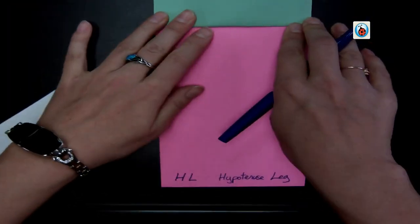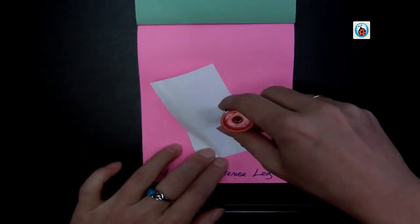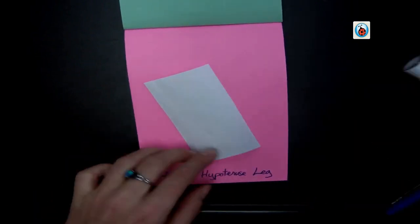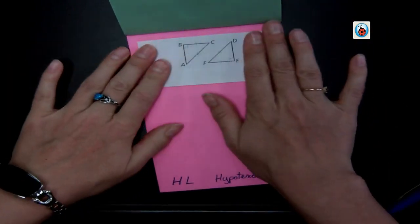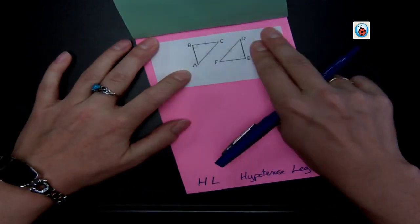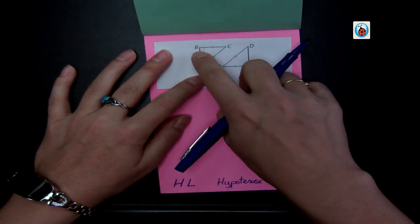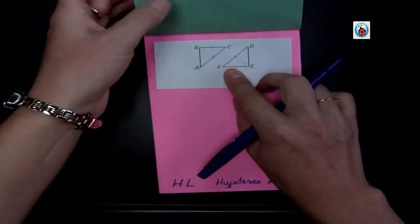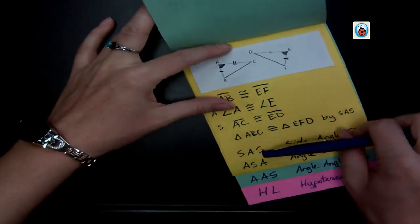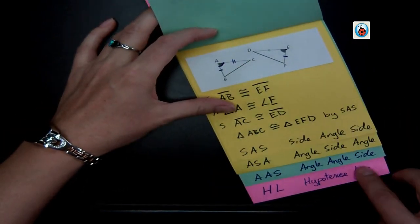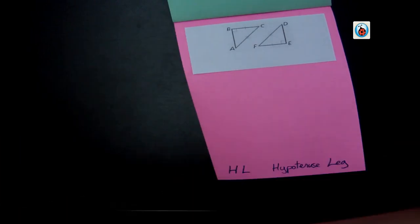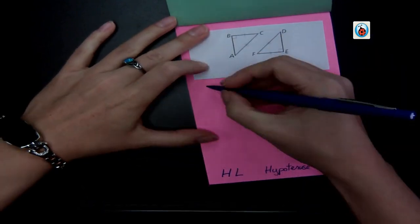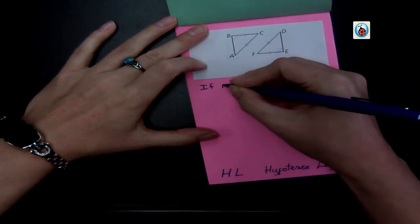Alright, and then our last one is when we have right triangles. And so here I have side, side, angle, but that's not an option. If I have side, angle, side, the angle always has to be sandwiched in between the two of those. So here I have side, side, angle, it doesn't work. So instead, when I have a right triangle, so if it is a right triangle...